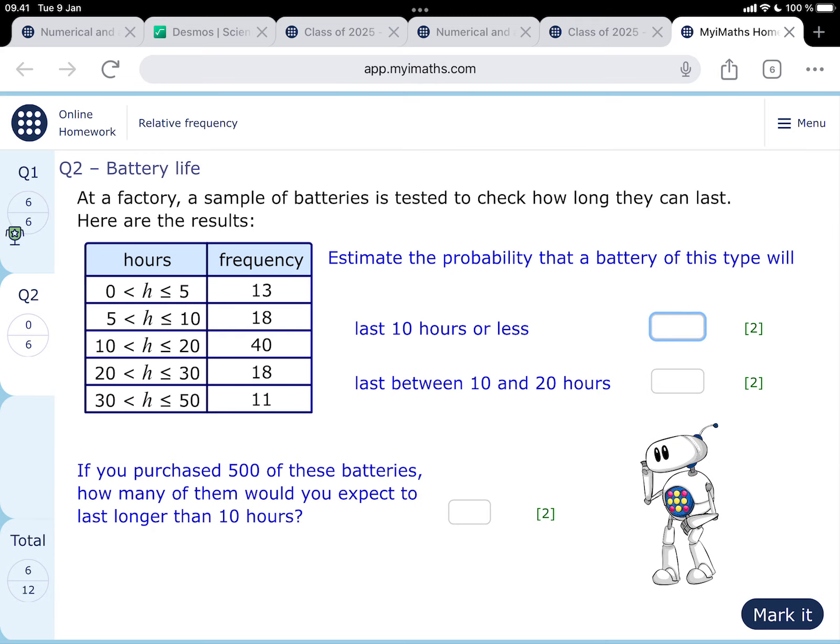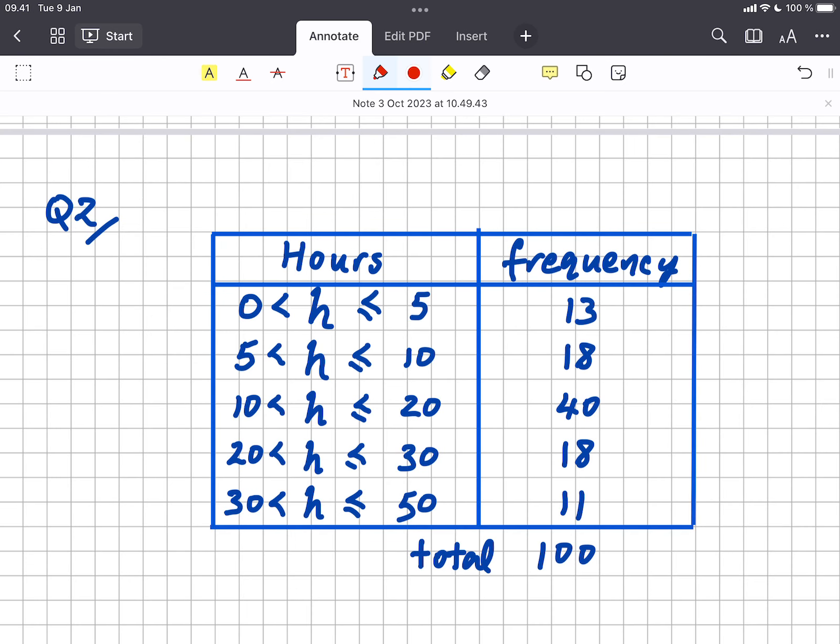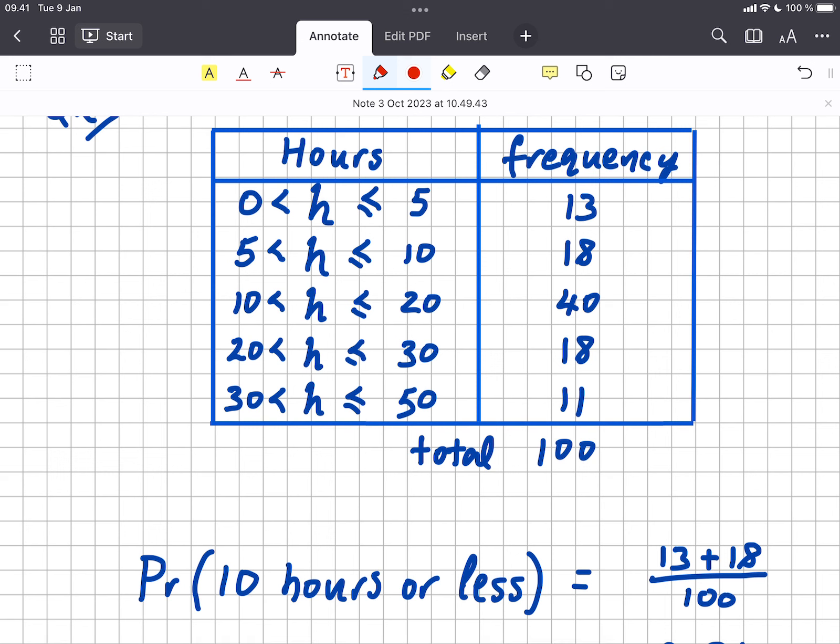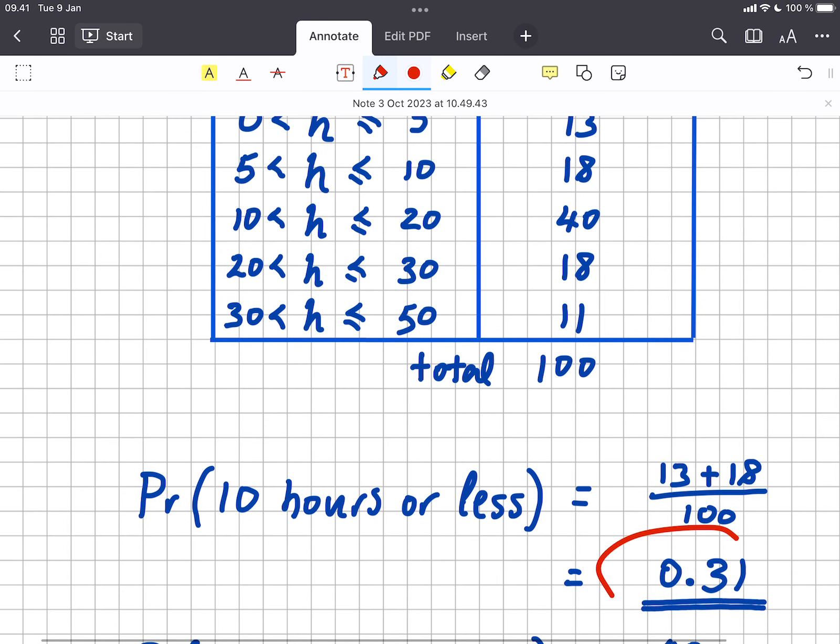So in my notebook I've copied out the table and I've added everything up to see that the total is 100. So the first question was what is the probability of the things lasting 10 hours or less. So the number of times we observed 10 hours or less was these two, the 13 and the 18. So that's happened out of 100 times. So 13 plus 18 out of 100, 13 plus 18 divided by 100 as a fraction, and that's 0.31. So my first answer that I'm going to fill in is 0.31.